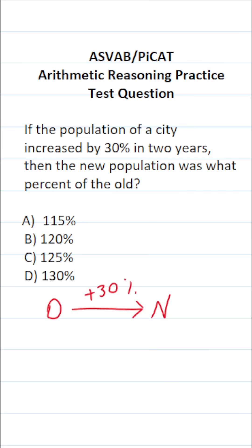So I'm going to say the old population—this is me just coming up with a number that's very easy to work with mentally—was 100 people.